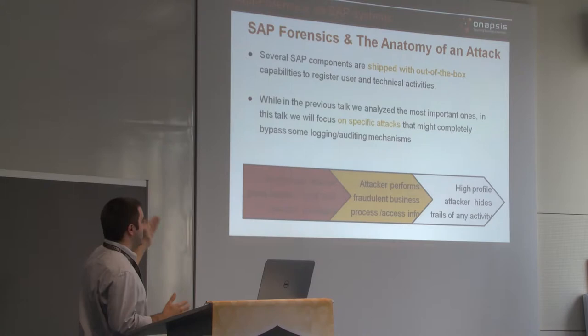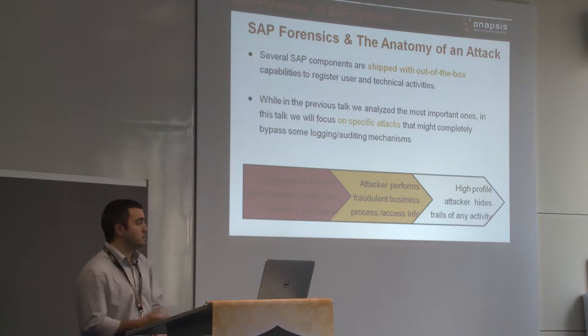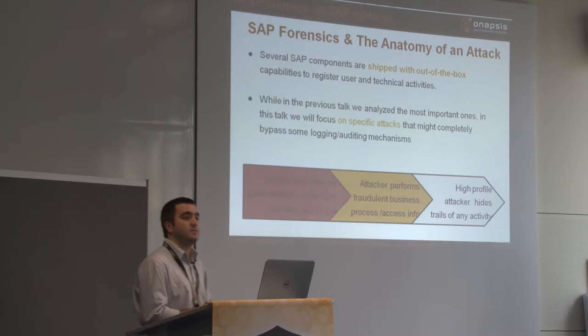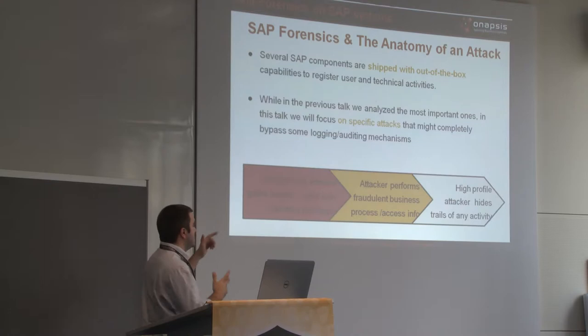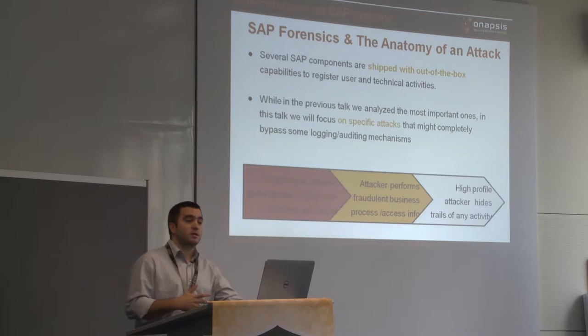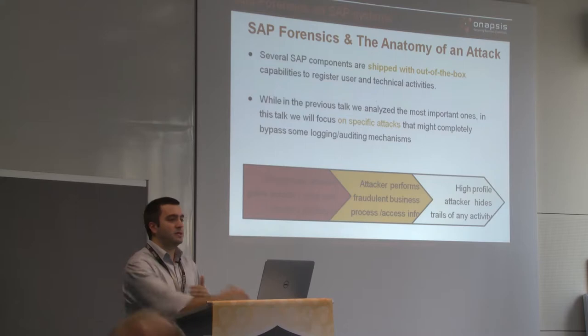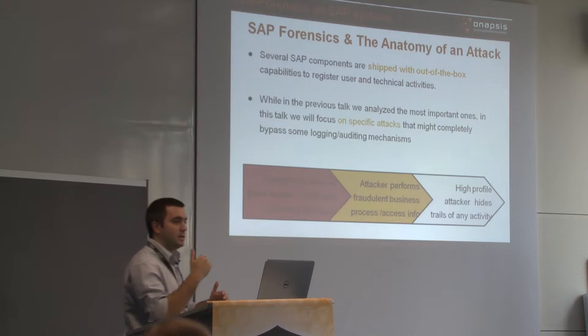This is the anatomy of an attack. Depending on the attack vector, an attacker breaks into an SAP system — if it's an SOD violation, with a valid user; if it's a misconfiguration or missing patch being exploited, sometimes without credentials. The attacker performs activities: executing transactions, accessing information, creating a new user, connecting to a different system. But if the attacker is advanced, they will try to hide their traces because they don't want to be discovered — they want to execute this over and over.